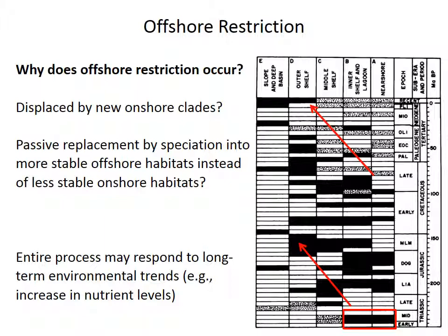One possibility is that nutrient levels have increased over this interval, and probably over the Phanerozoic as a whole. Clades that originated earlier may have been adapted for lower-productivity environments, and therefore may have been displaced over time to live in lower-productivity offshore habitats as global productivity increased. As global productivity increased, new taxa could evolve in shallow water to take advantage of high productivity there, while the previous taxa — better adapted for low-productivity environments — moved offshore where conditions remain nutrient-poor.